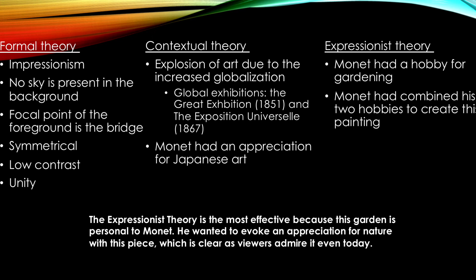As for the contextual theory of art, the explosion of art occurred during the 1890s due to increased globalization. This is mainly because of two global exhibitions around that time: the Great Exhibition in Britain in 1851 and the Exposition Universelle in 1867 in France. Because of this, artists were thriving, as these exhibitions featured art from many different countries. Monet himself had an appreciation for Japanese art, which led him to create this painting and embed the meaning of Buddhist beliefs of harmony with nature.